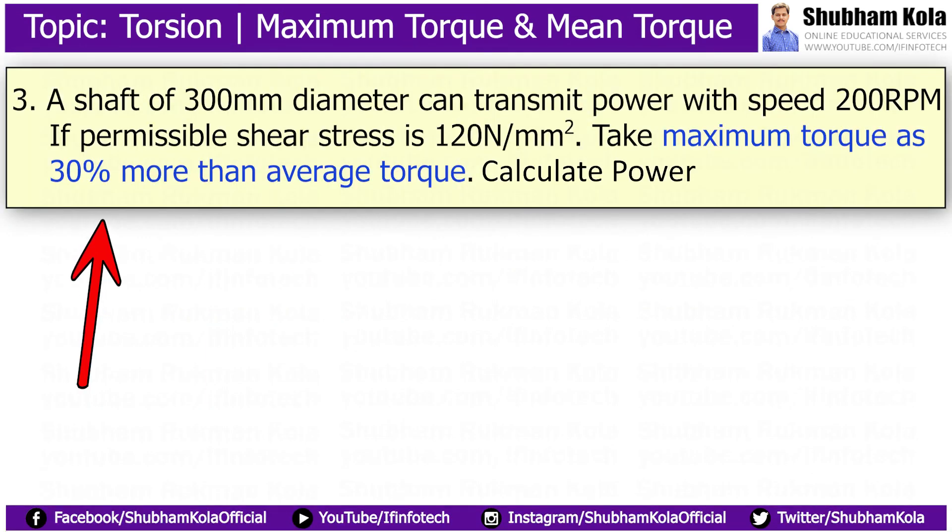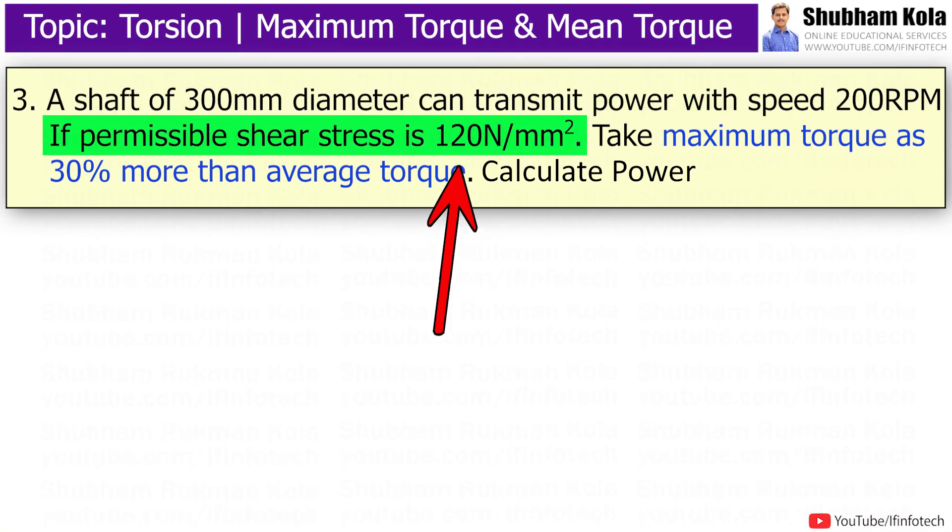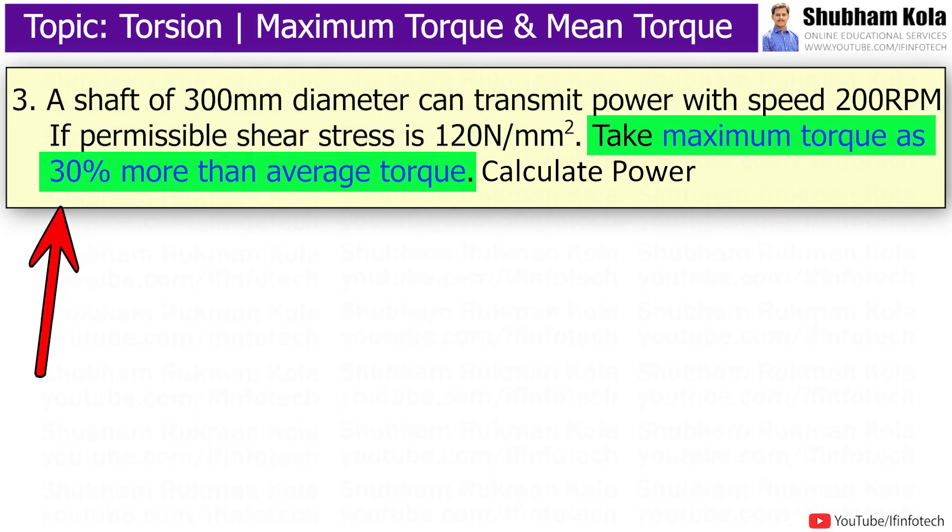For the next problem, the statement is: a shaft of 300 mm diameter can transmit power with speed 200rpm. If permissible shear stress is 120 N/mm², take maximum torque as 30% more than average torque. Calculate power.